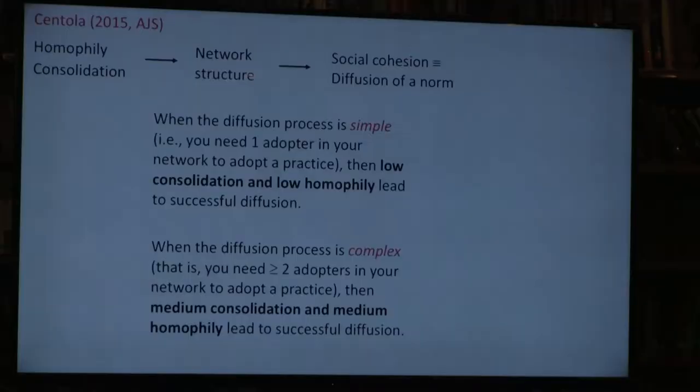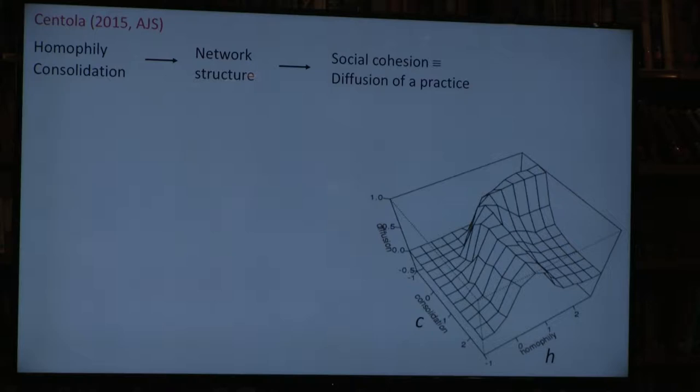This is our replication of the paper showing Damon's results. On the z-axis we see diffusion outcomes; on the x and y-axes we have consolidation and homophily. We see successful diffusion happening at middling levels of both parameters, and they actually interact—the value of homophily affects the effect of consolidation.